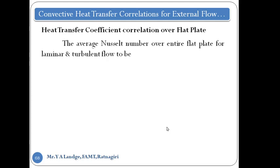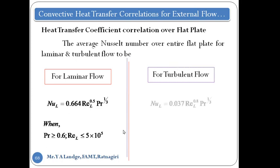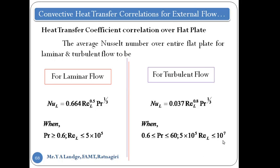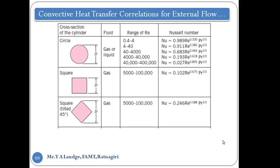For the entire flat plate of length L, the correlation for the average Nusselt number for laminar flow is: Nu_L equals 0.664 times Re_L to the power 0.5 times Pr to the power one-third. From these two slides, we see the flat plate analysis and how to find the Reynolds number, Nusselt number for laminar and turbulent flow.